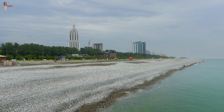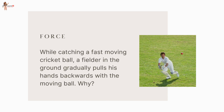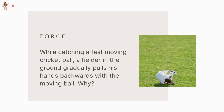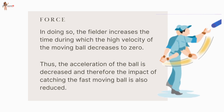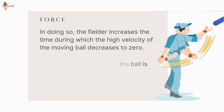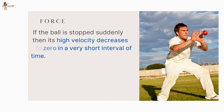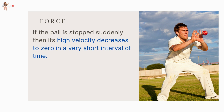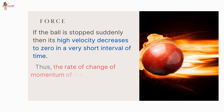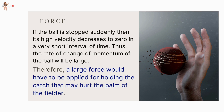The Second Law of Motion is often seen in action in everyday life. For example, while catching a fast-moving cricket ball, a fielder gradually pulls his hands backwards with the moving ball. In doing so, the fielder increases the time during which the ball's high velocity decreases to zero, thus decreasing its acceleration. Therefore, the impact of catching the ball is reduced. If the ball is stopped suddenly, its velocity decreases to zero in a very short interval, making the rate of change of momentum large — requiring a large force that may hurt the fielder's palm.